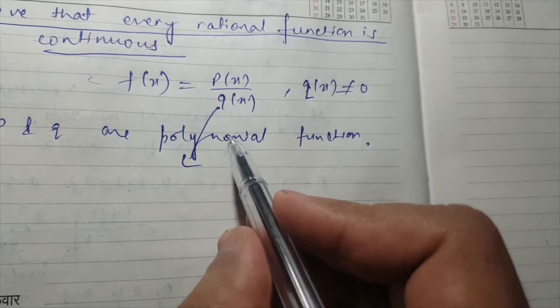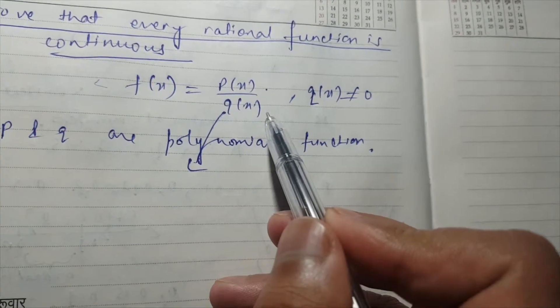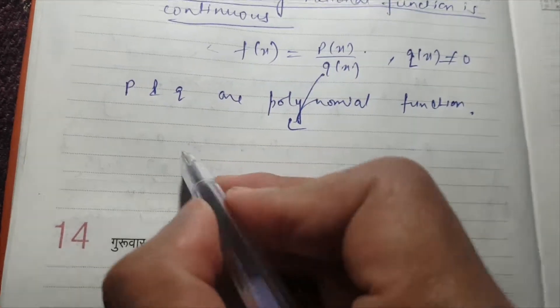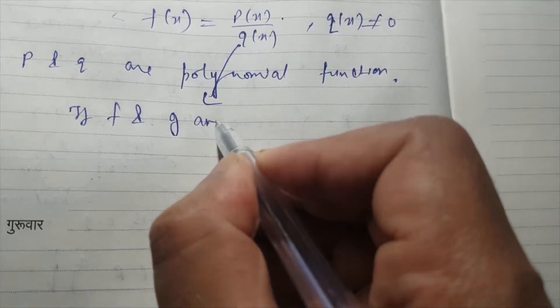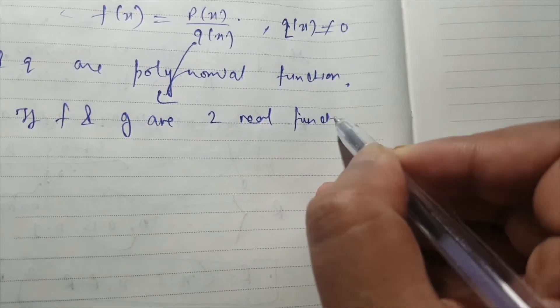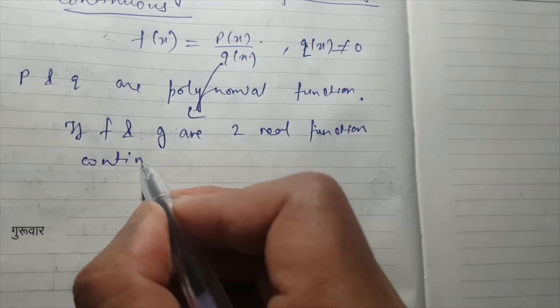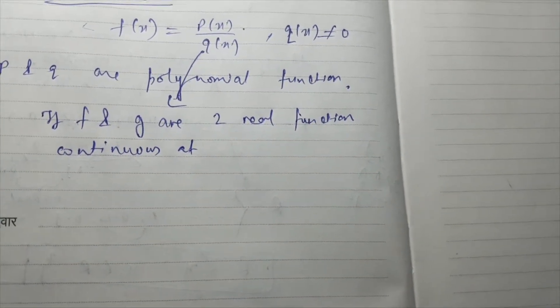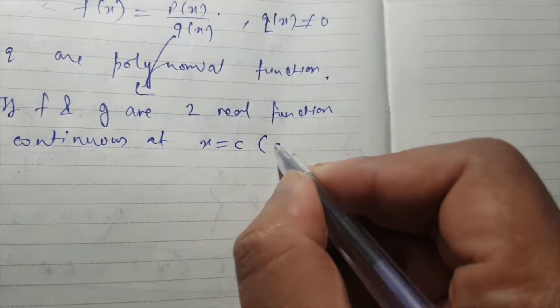Since this rational function is one polynomial function divided by a second polynomial function, we will use a theorem. If f and g are two real functions continuous at x equal to c, where c is a real number,